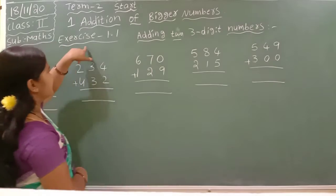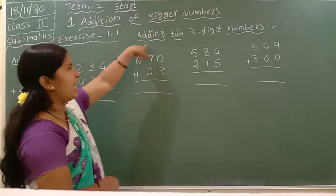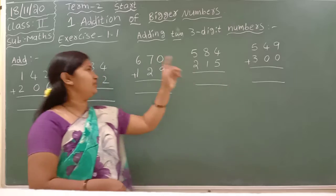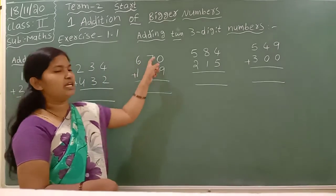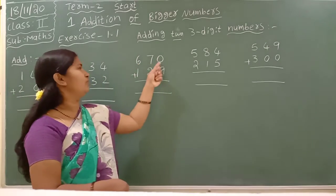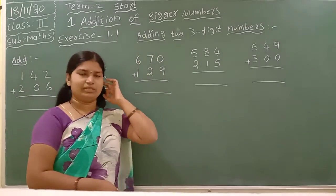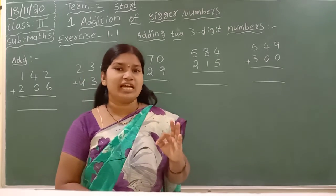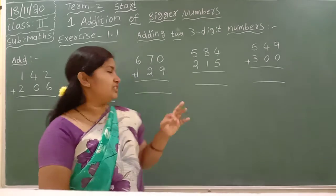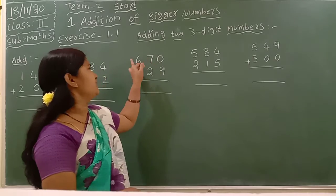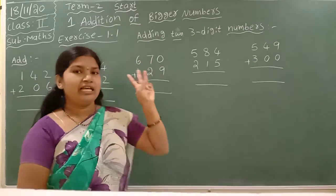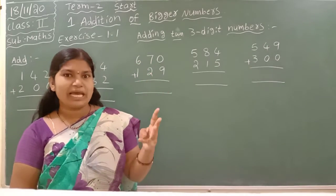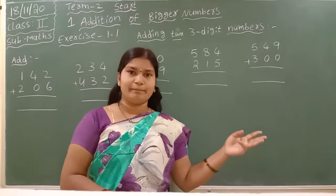In Exercise 1.1 we are adding two 3-digit numbers. These are 3-digit numbers. How many place values are given? 1, 10, 100 — they are given 3 place values, so it is known as a 3-digit number.